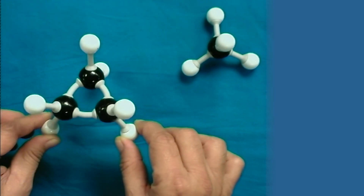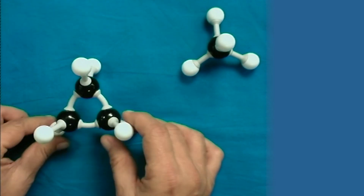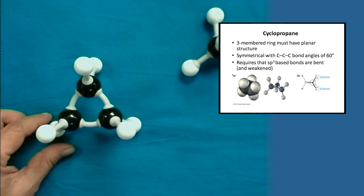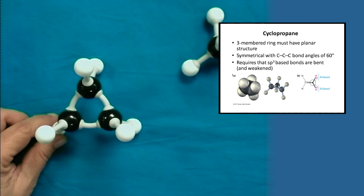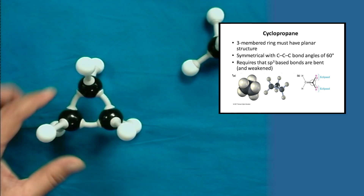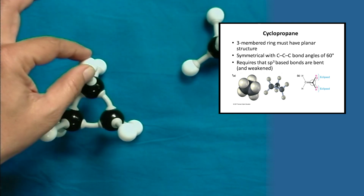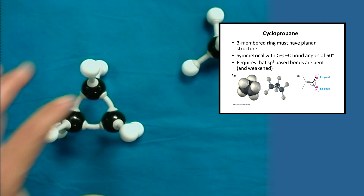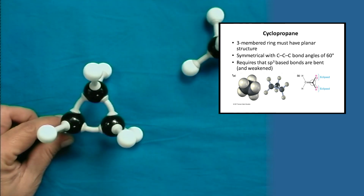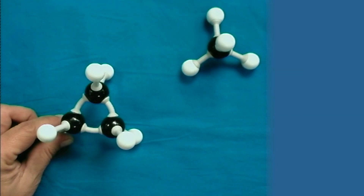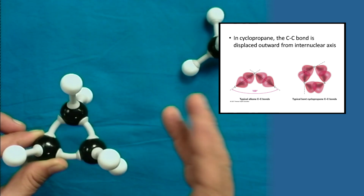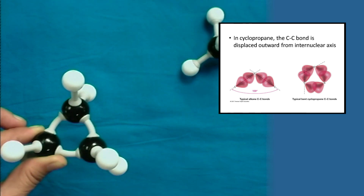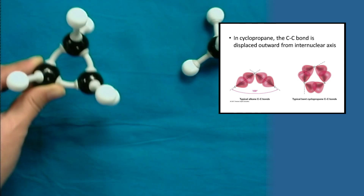Now let us take up the structure of cyclopropane. As I have explained, you can see in the slide the torsion strain present — the sp³ hybridized carbon atoms and the hydrogen atoms attached are having interactions between them, some sort of eclipsed-type interactions, which cause some strain. It has come out of the axis and its bond angle is slightly bent, as you can see in the slide.